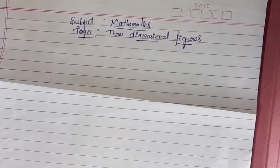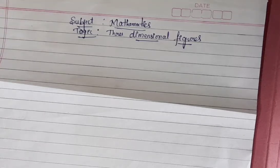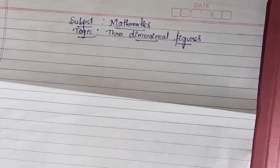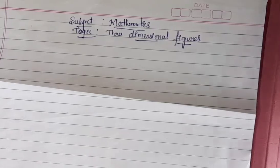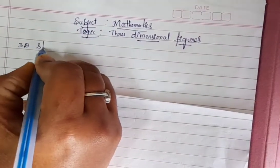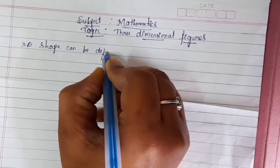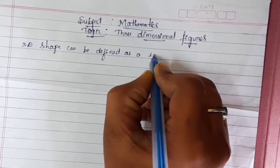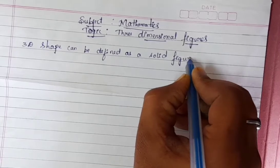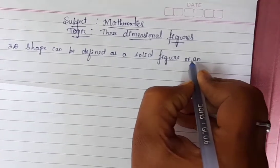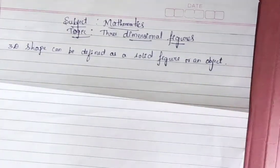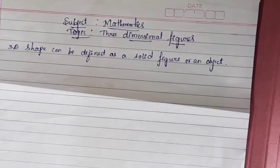Hello everyone. We observe many three-dimensional objects around us. A three-dimensional shape can be defined as a solid figure or an object or shape that has length, width and breadth.